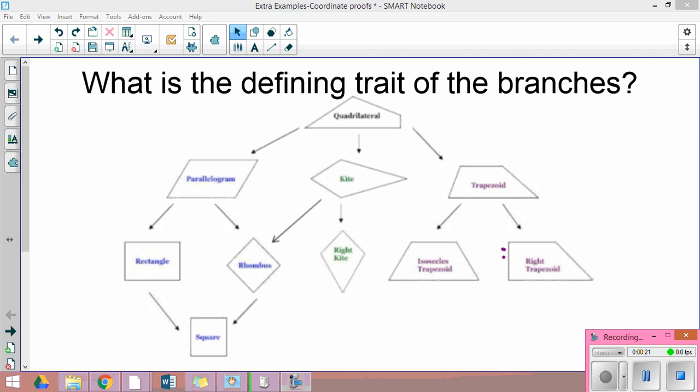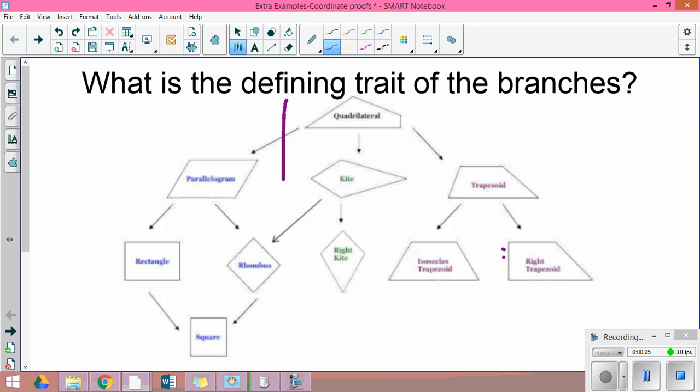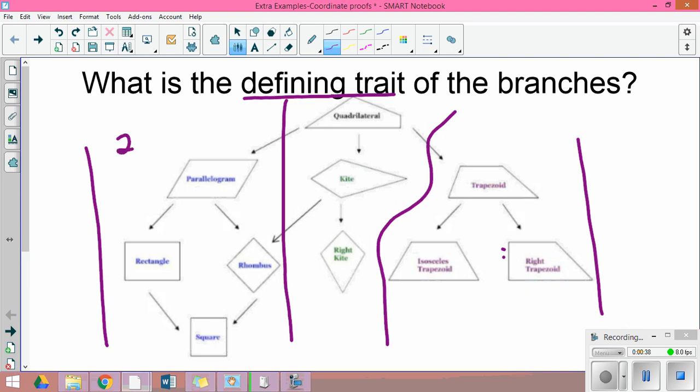The first thing I want to think about is going back to this family tree. There's really three branches in our family tree: the parallelogram family, the kite family, and the trapezoid family. The defining trait that separates those three branches has to do with parallel lines. Parallelogram family has two pair parallel lines, the kite family has zero parallel lines, and the trapezoid family has one pair parallel.